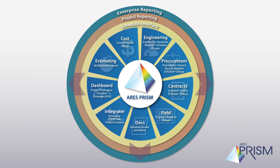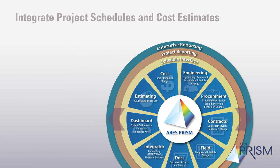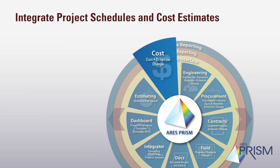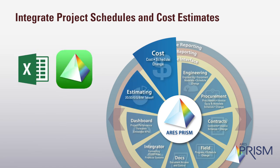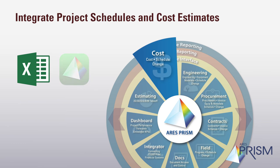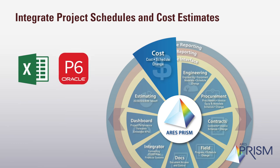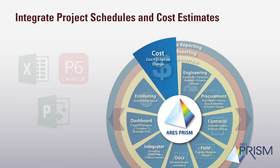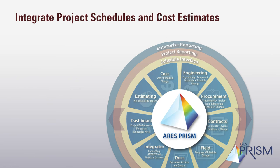Through the implementation of the Prism Cost Module, there are several key benefits that organizations gain. Integrated Project Schedules and Cost Estimates: Prism Cost helps organizations integrate schedules and cost estimates to develop time-phase budgets and forecasts. You can import the estimate directly into the Cost Module from Excel or Prism Estimating, and you can import your schedule from Excel, P6, or Microsoft Project. Now you'll be able to have all of your project data in one centralized location.